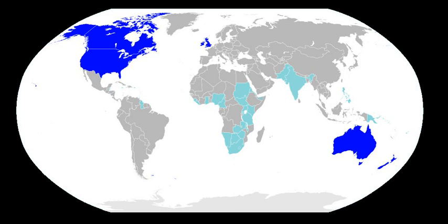An English syllable includes a syllable nucleus consisting of a vowel sound. Syllable onset and coda are optional. A syllable can start with up to three consonant sounds, as in 'sprint', and end with up to four, as in 'texts'. The word 'strengths' is thus an example of the most complex syllable possible in English.